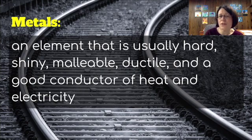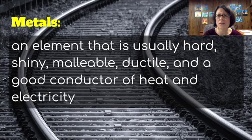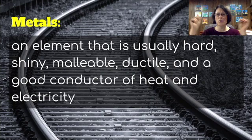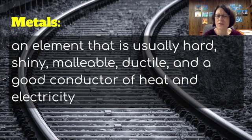The periodic table is also arranged according to different types of elements such as metals and non-metals. Metals are elements that are usually hard, shiny, malleable, ductile, and good conductors of heat and electricity. Malleable means that it can be pounded into shape — think of an iron worker hammering iron. Metals also tend to be ductile, meaning they can be drawn into wires. That's why we use metals for conducting electricity and why we use metal pans on our stoves — because they are good conductors of heat.